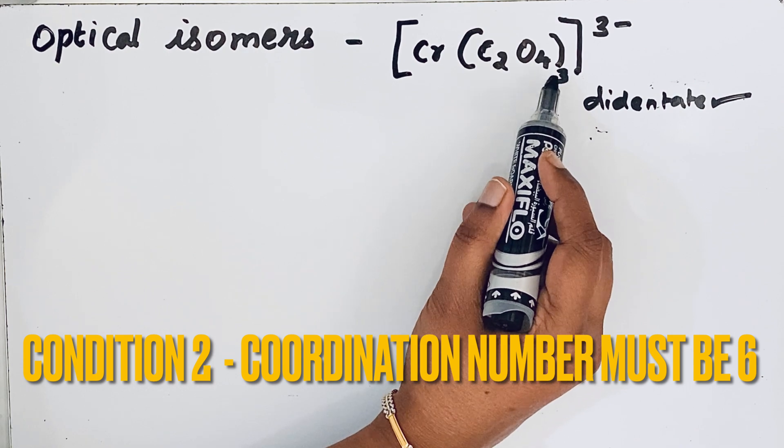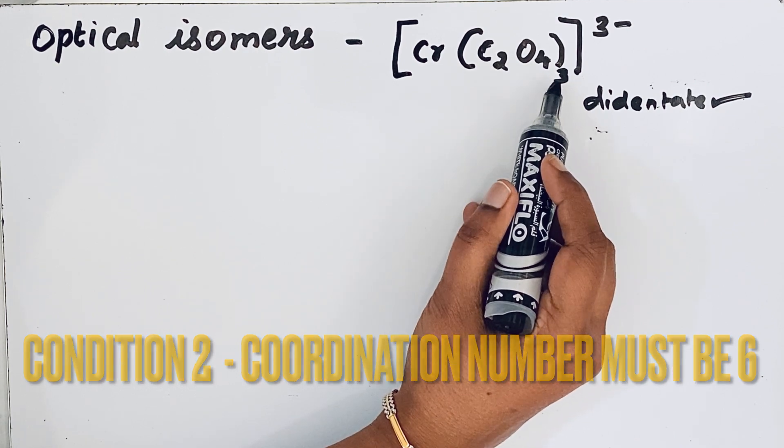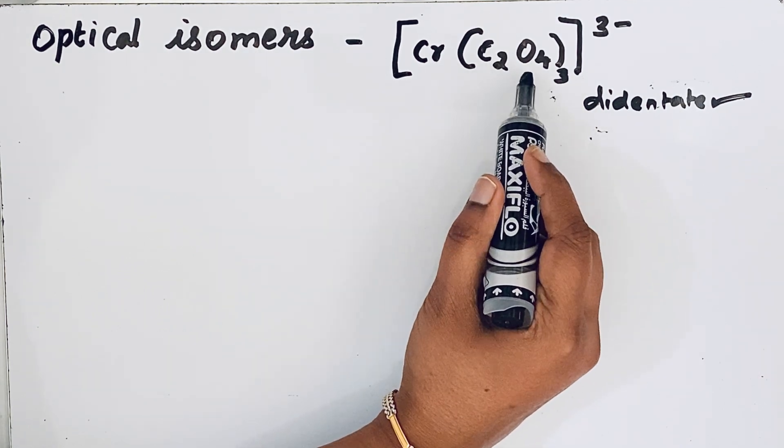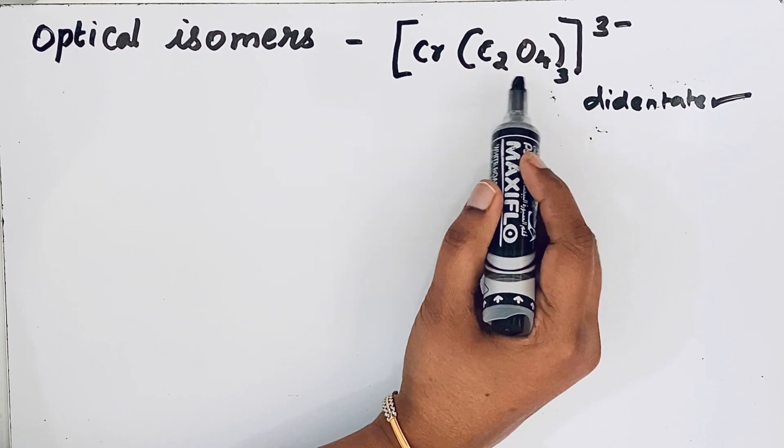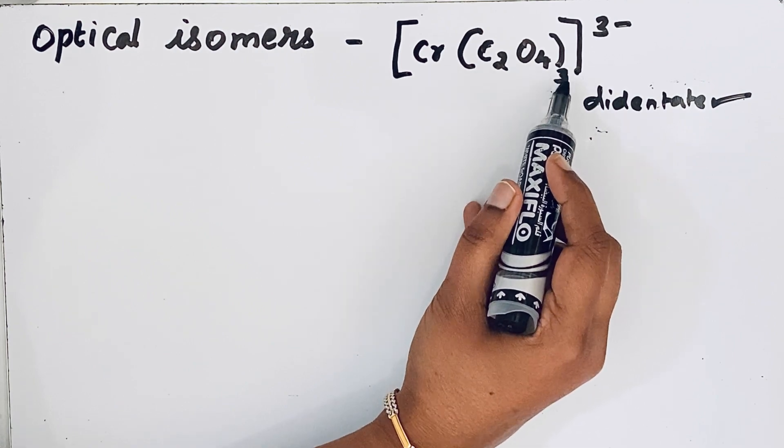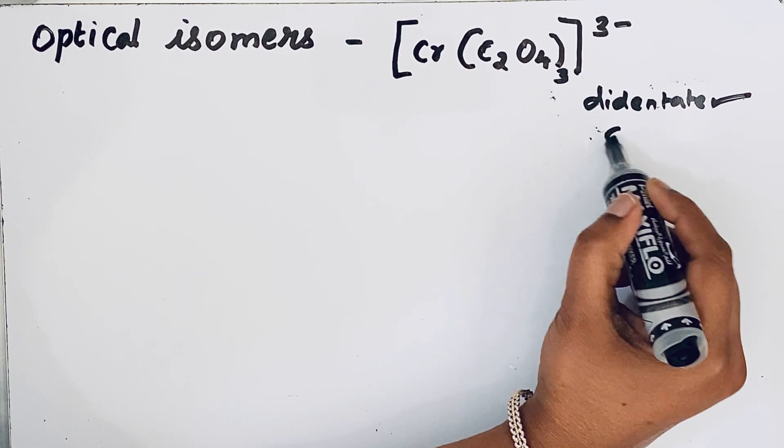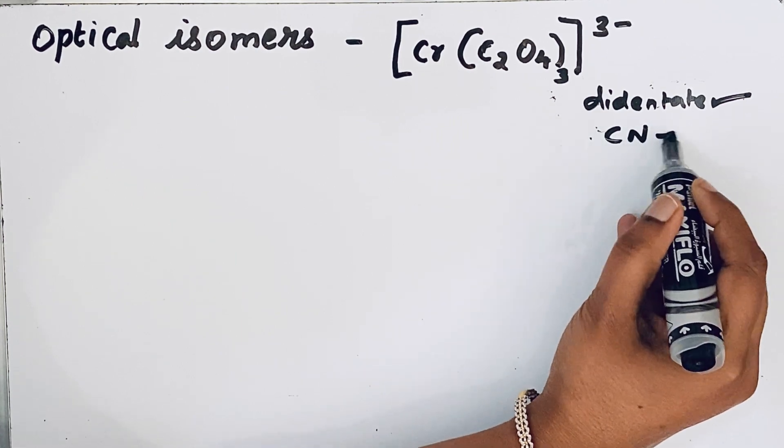So each oxalate has two donor atoms. Since there are three oxalate ligands, the coordination number is 2 times 3, which equals 6. So CN, that means coordination number, is 6.